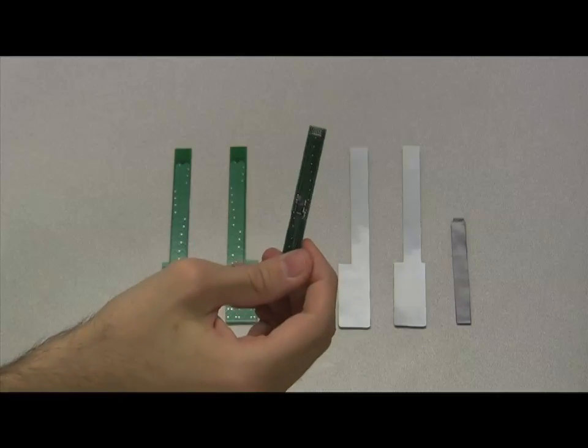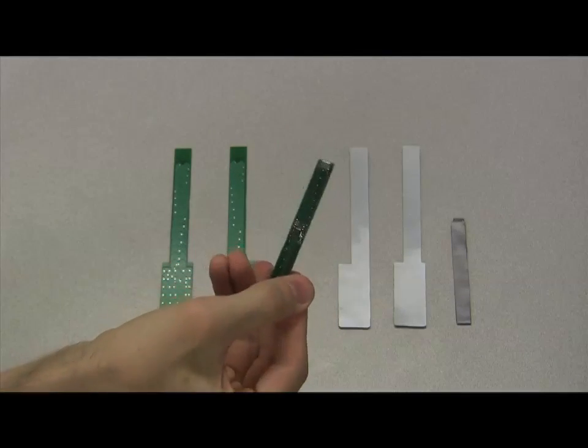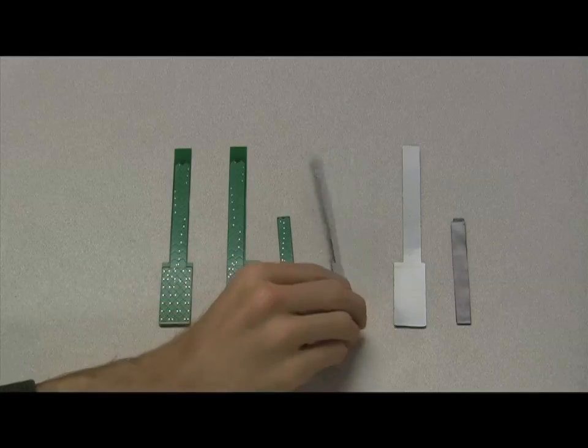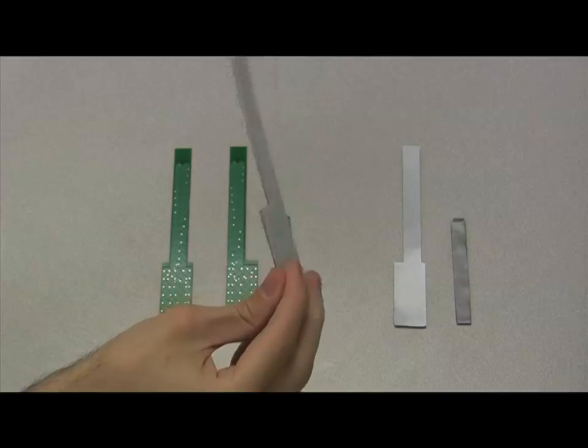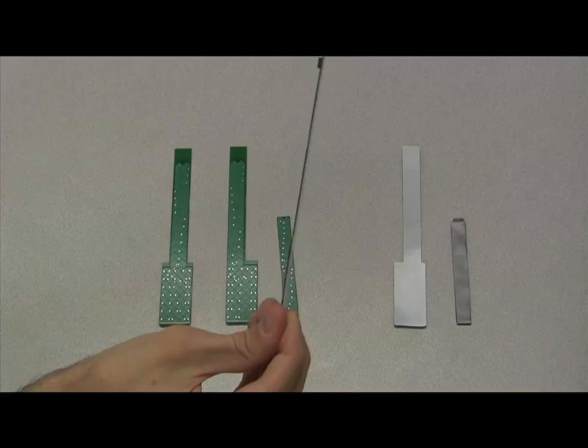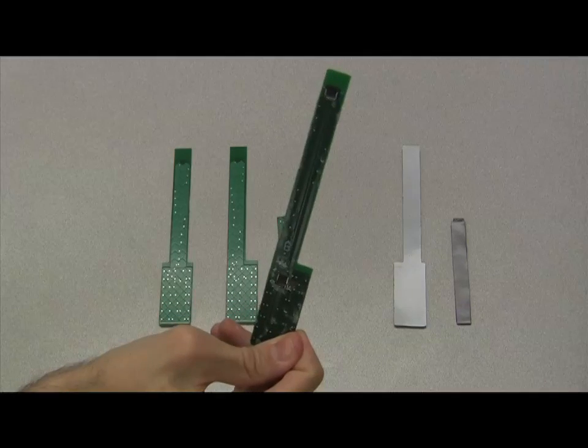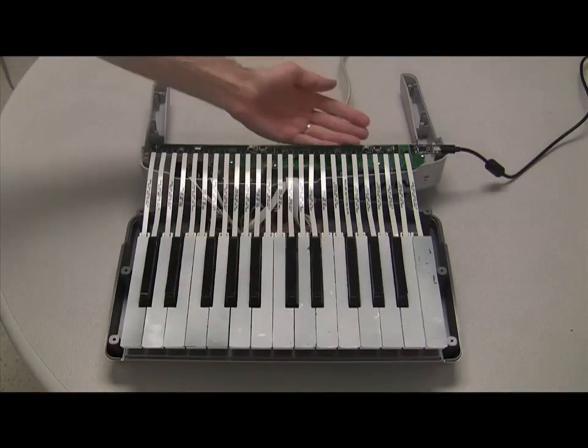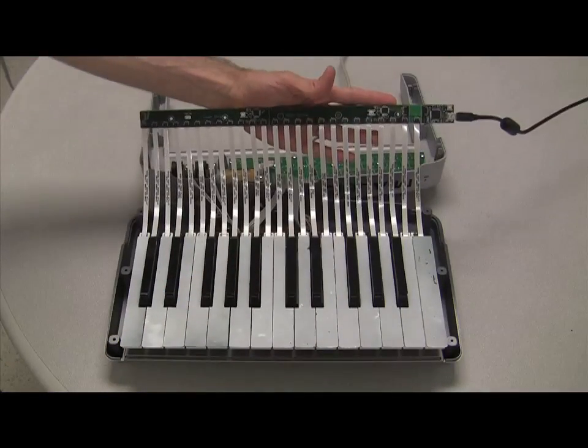These are touch-sensitive piano key tops. Each key uses capacitive sensing to measure the position of fingers on the key surface. Keys are covered with a thin plastic laminate to preserve the feel of the traditional keyboard. The sensors mount on an existing keyboard and communicate by USB with a host computer.